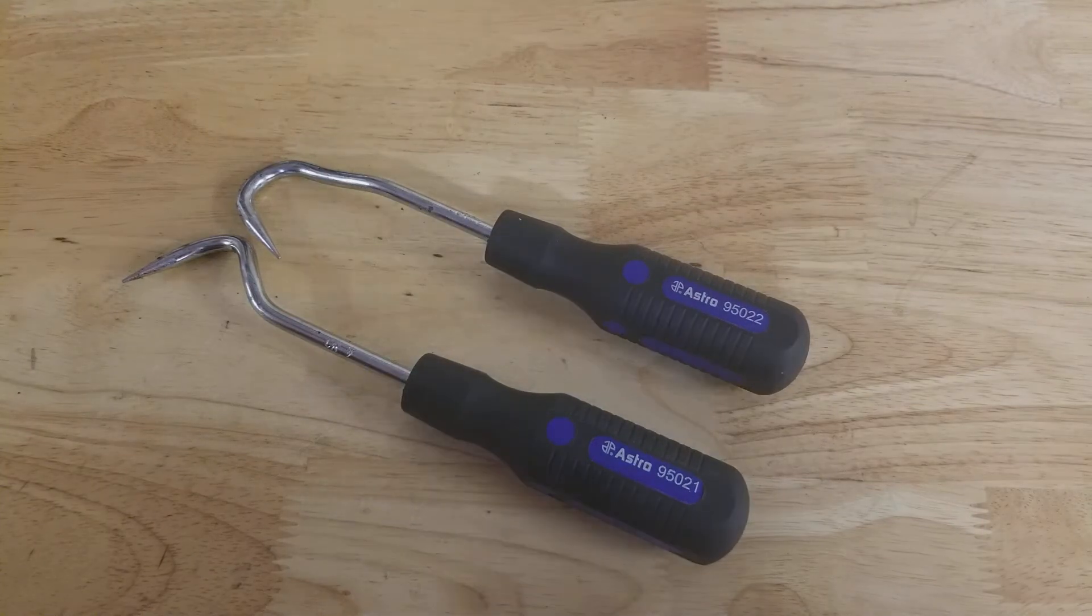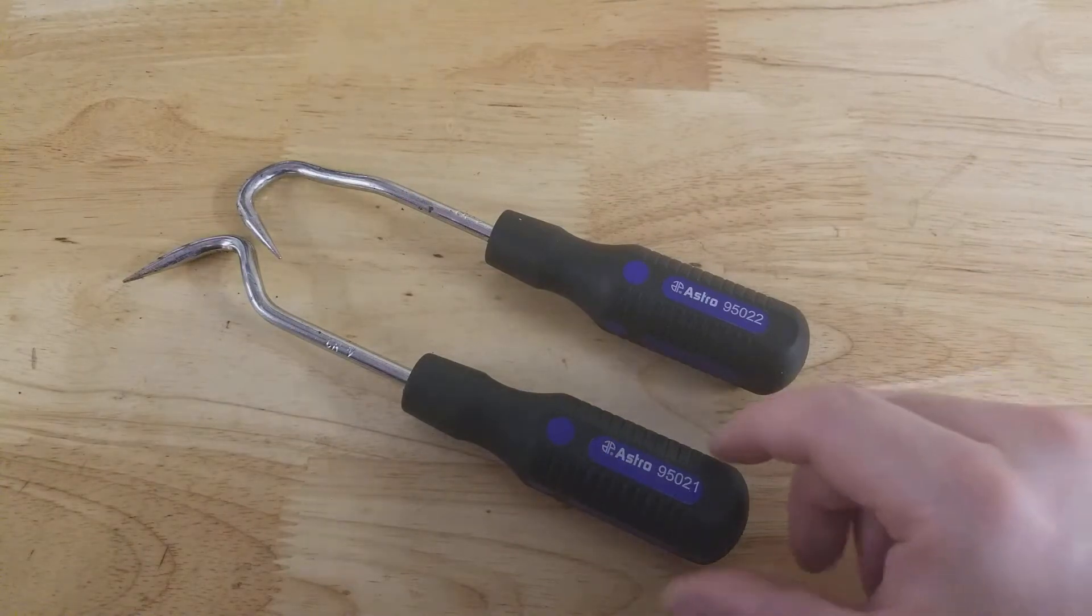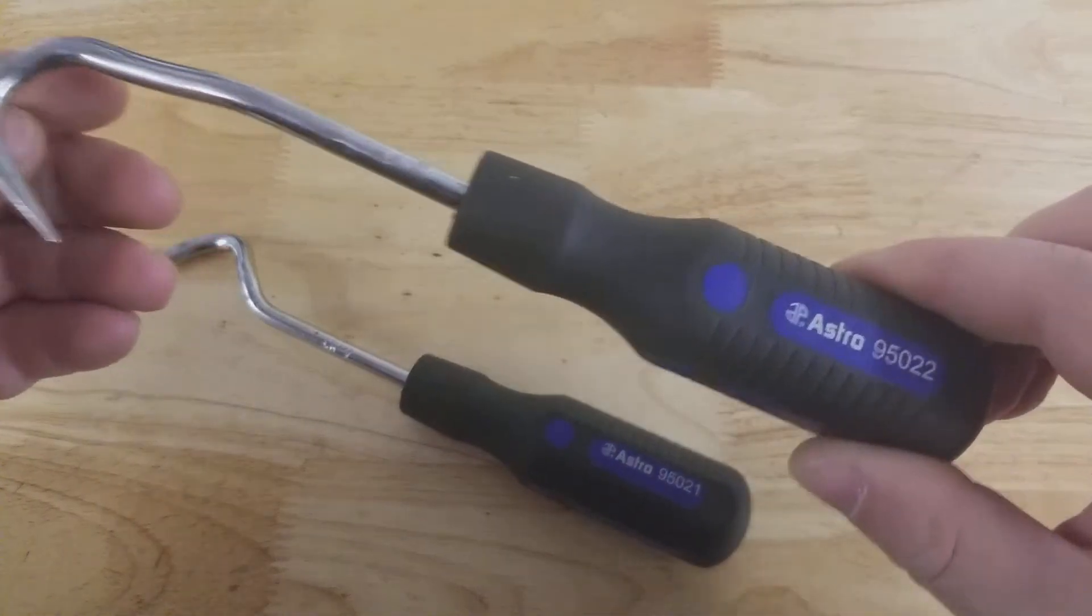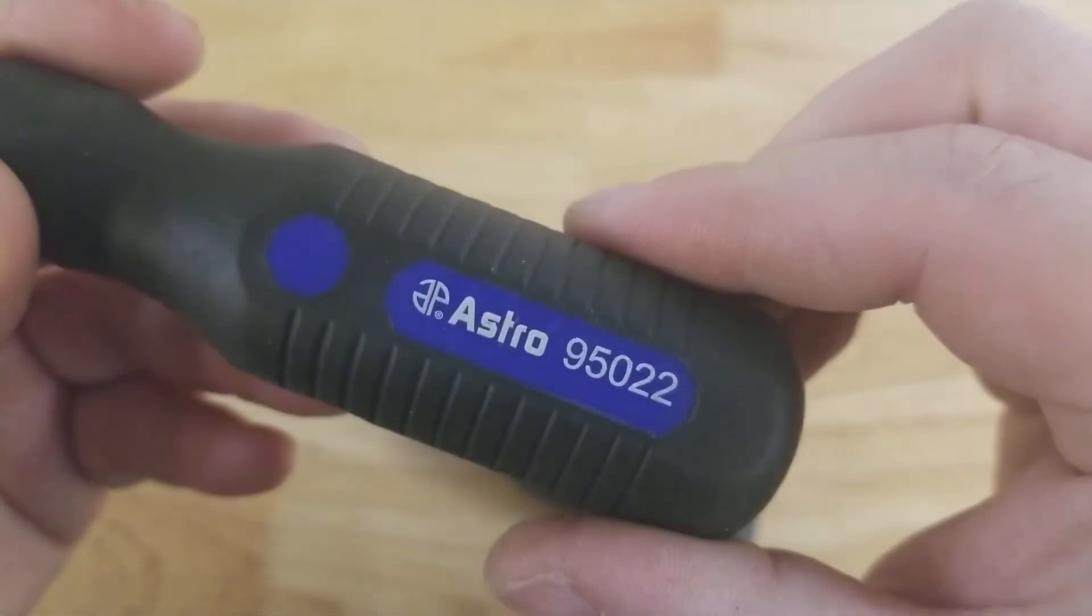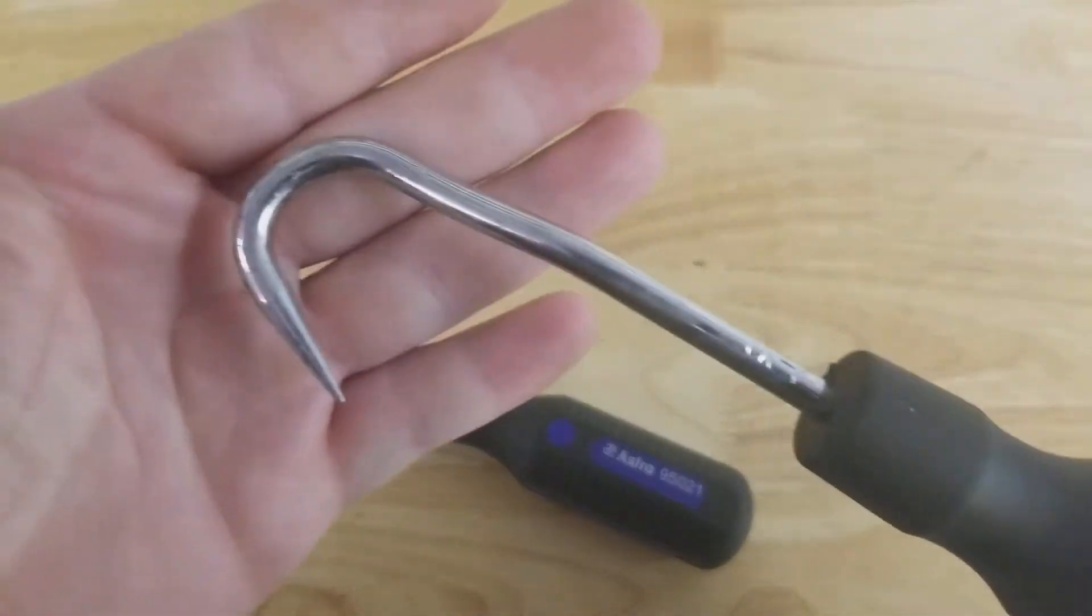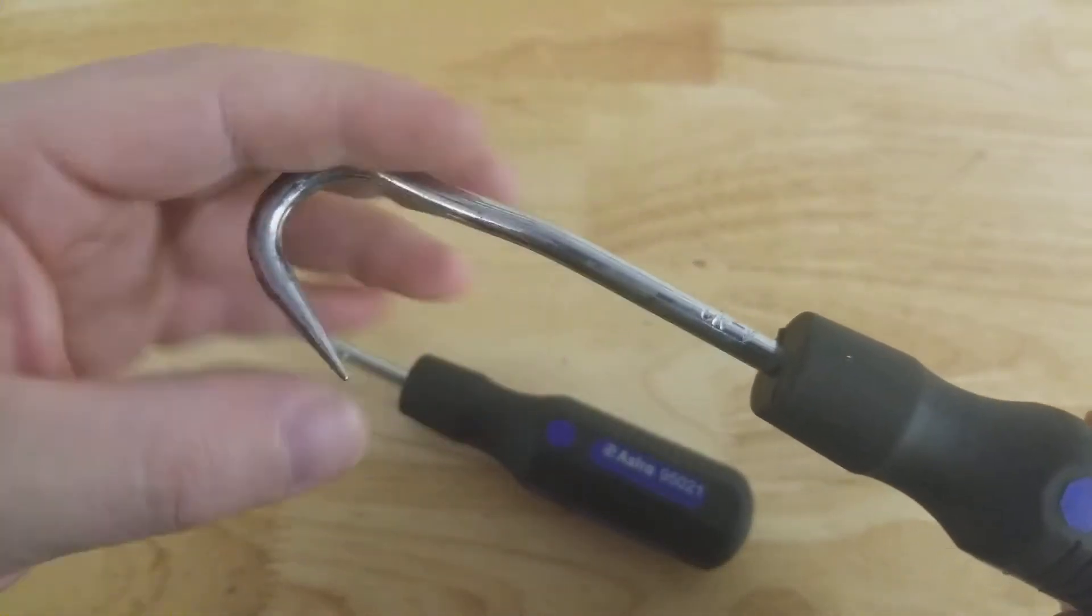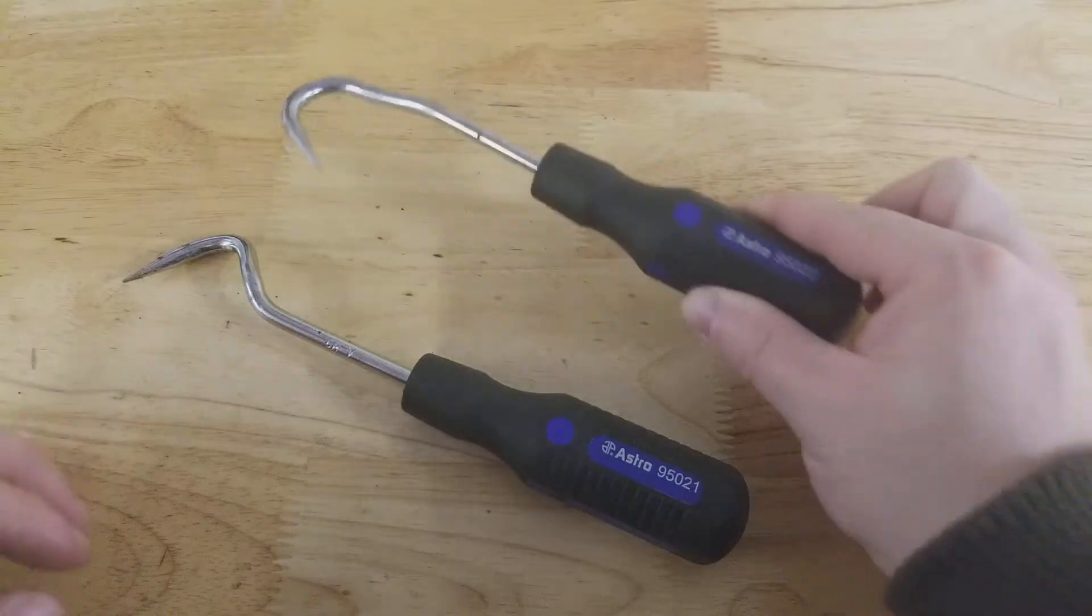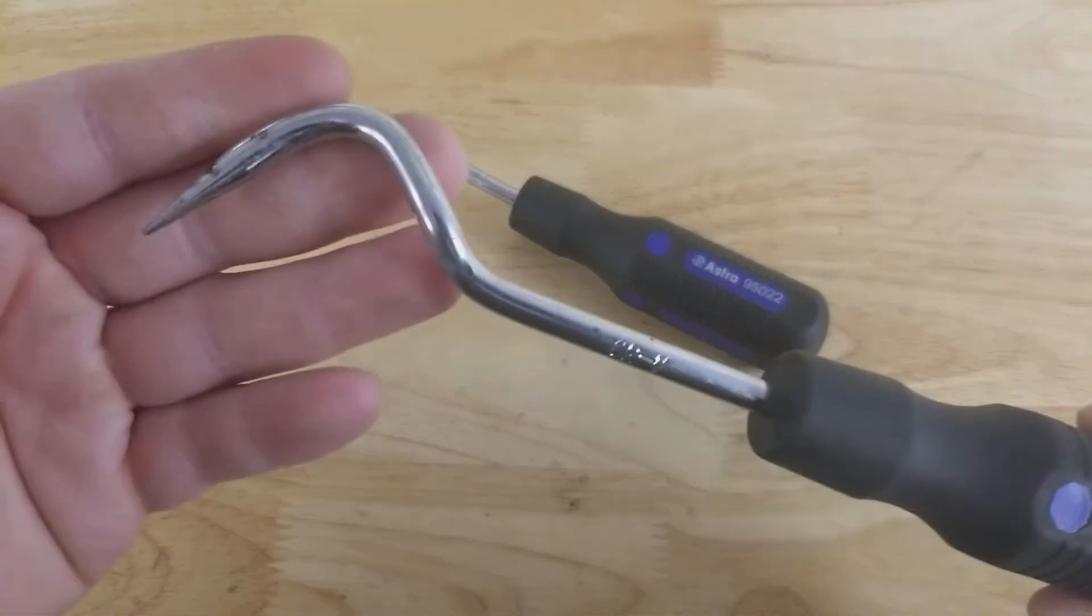Hey guys, for this video I want to show you these Astro Pneumatic picks. I've had these for a while now and really like them. This one is model 95022. You can see it's got the full U-turn design.